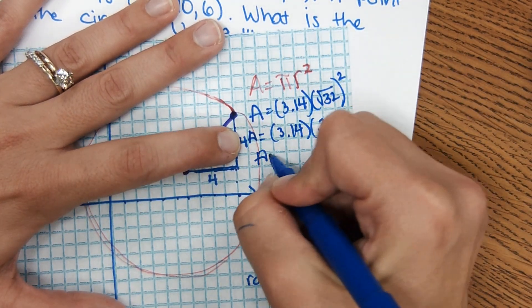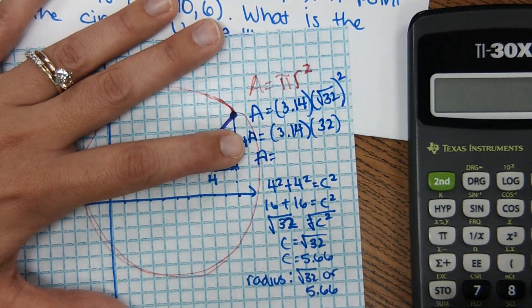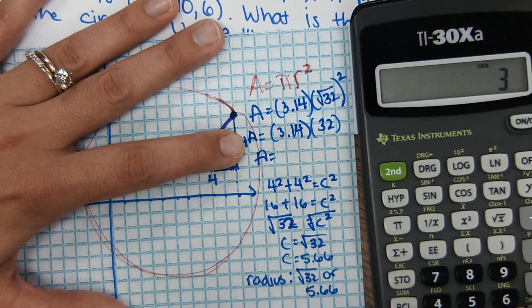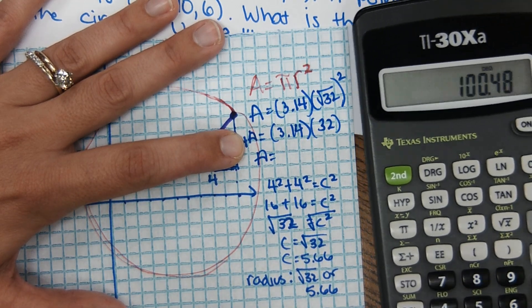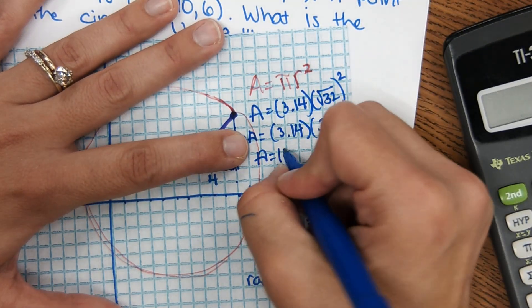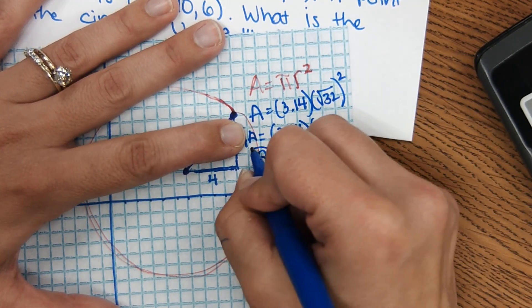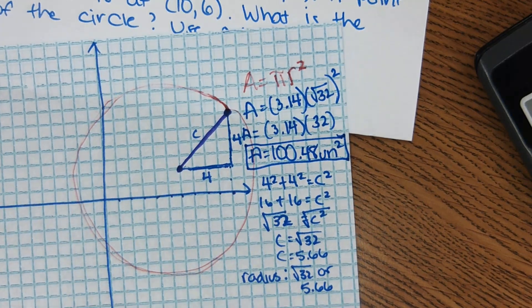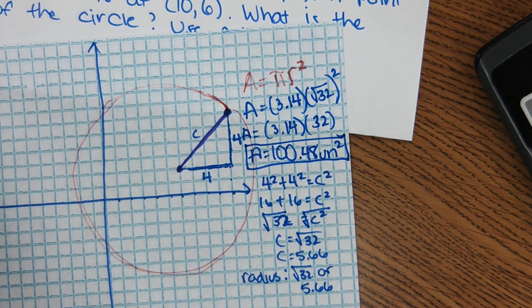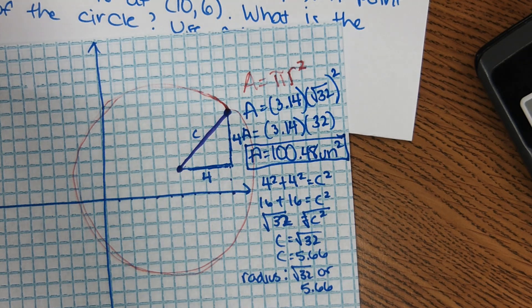So square root of 32 squared is just 32. And then the last step is to multiply these two numbers, 3.14 times 32. 100.48 units squared. And that's the area of the circle. But like I said, a little bit higher level because you're putting together a lot of skills, but you actually know all the skills to do it.